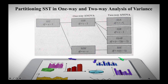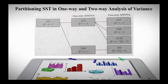The degrees of freedom for SSA is R minus 1 (number of rows minus 1), for SSB it is C minus 1 (number of columns minus 1), and for SSAB it is (R minus 1) multiplied by (C minus 1), which equals the degrees of freedom of A times the degrees of freedom of B. The SSW in one-way ANOVA — sum of squares within groups — is equivalent to the sum of squares of the error in two-way ANOVA. That is the difference between one-way ANOVA and two-way ANOVA.